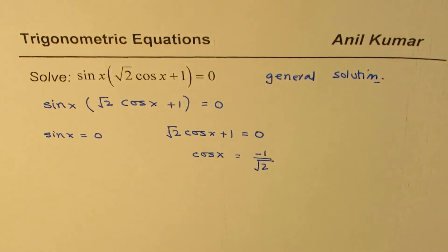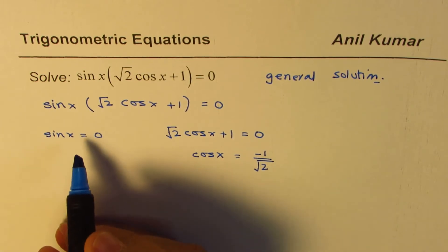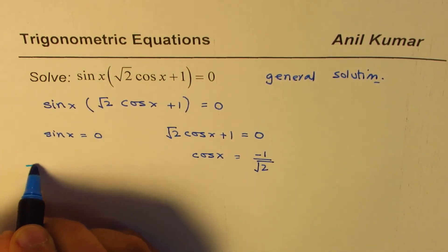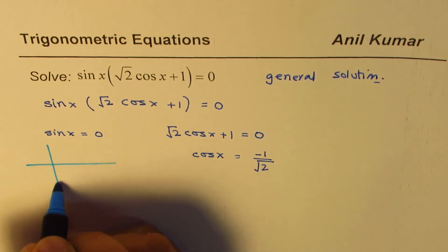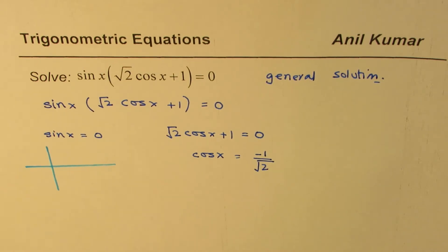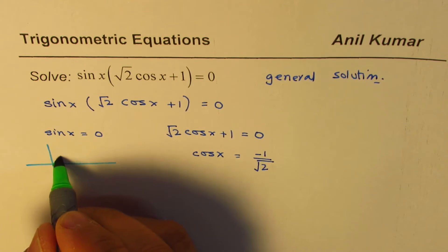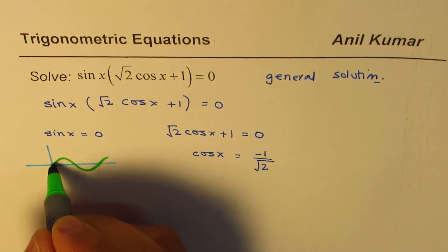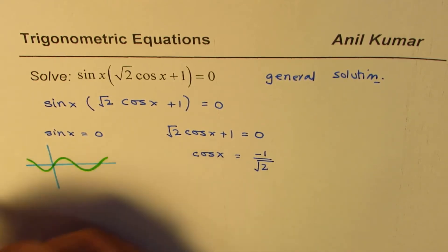So let's look into sin x equals to 0. Whenever sine cosine functions are given equal to 0 or 1, I prefer to find solution from their graph itself. Sine wave, as you know, is kind of like this. So it extends right like this.